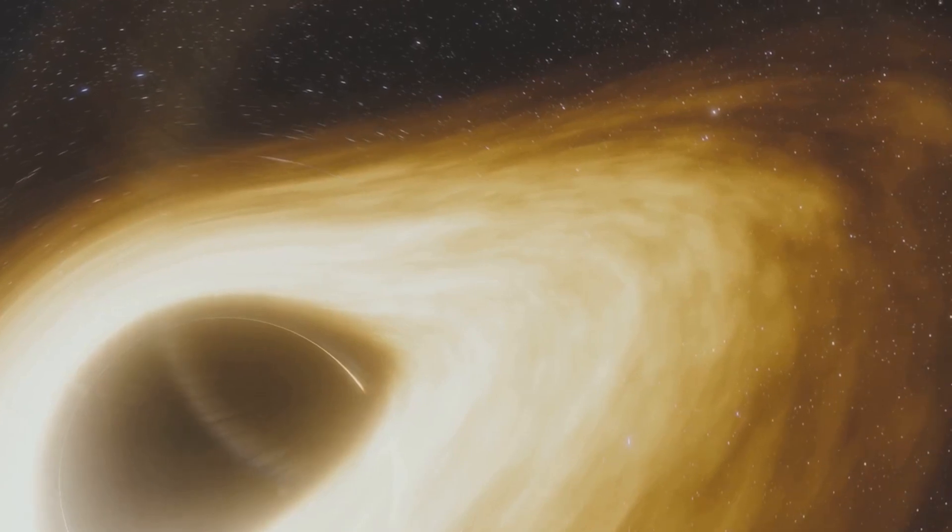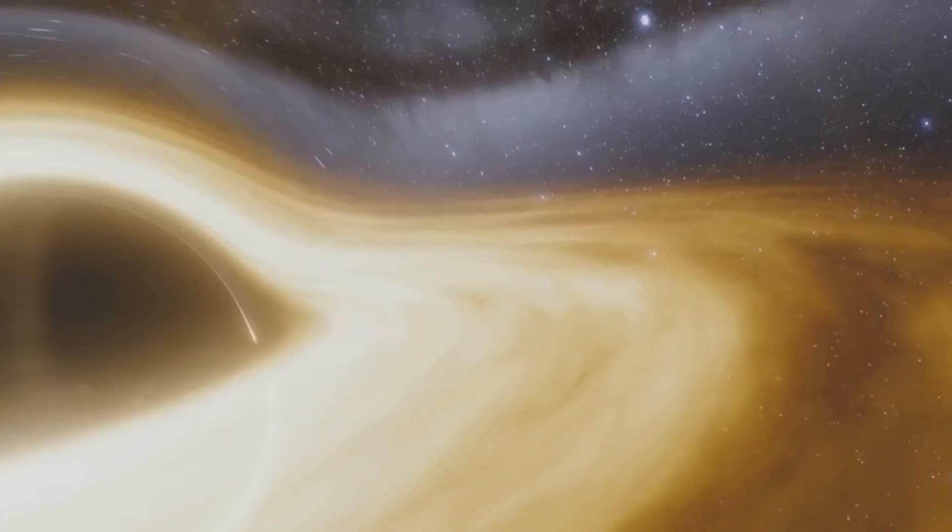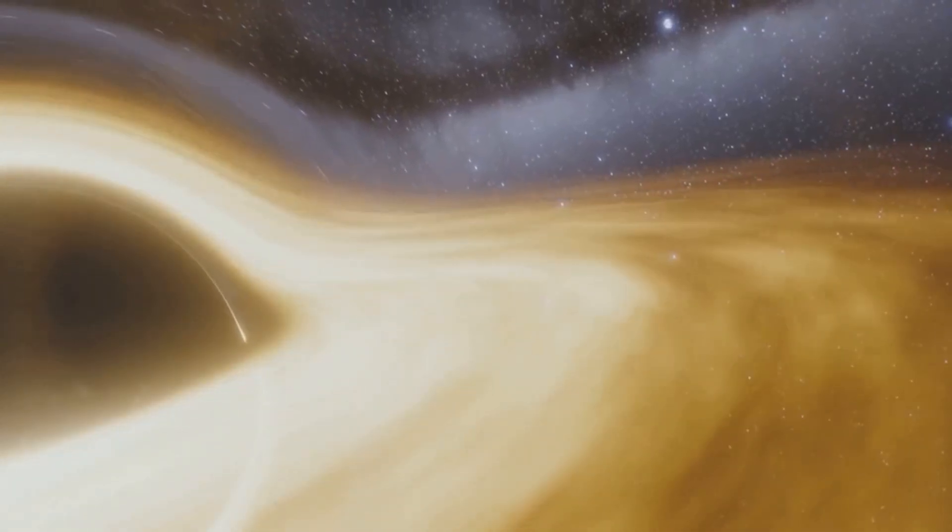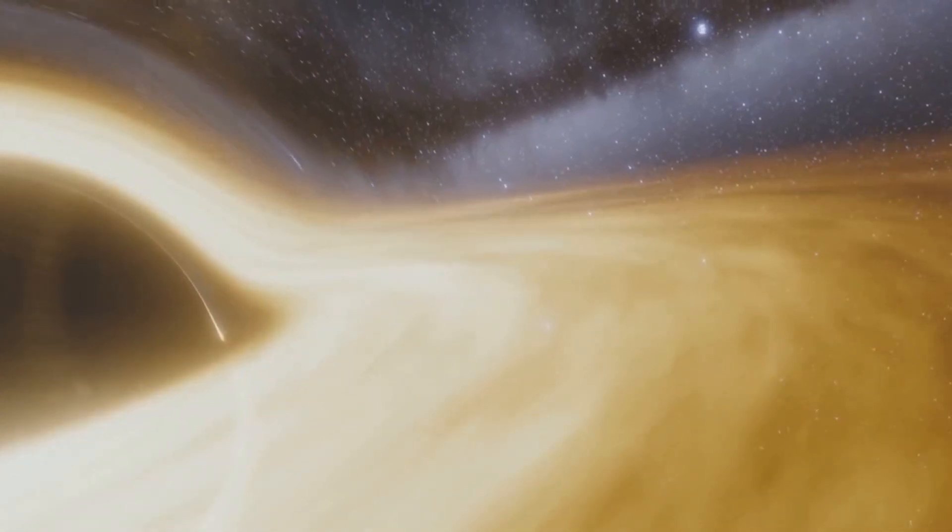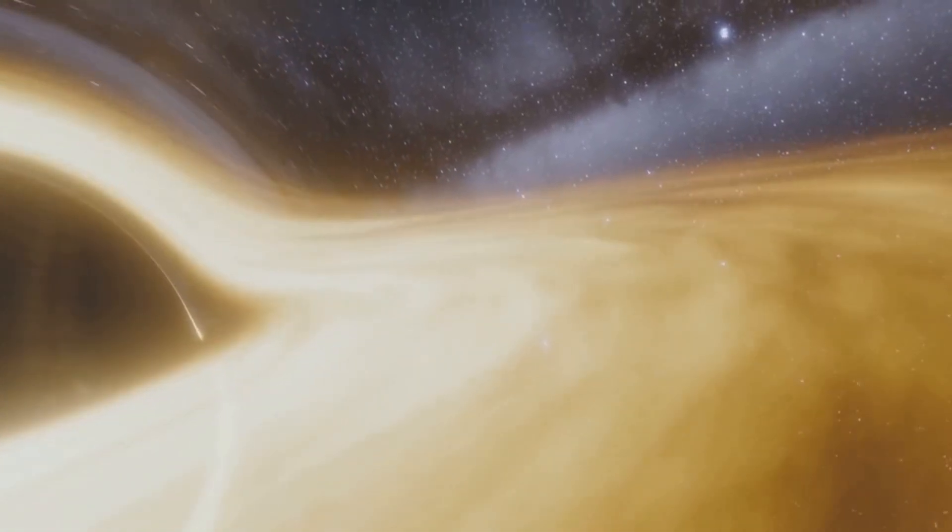The material sucked in spirals toward the black hole, forming what's called an accretion disk. This disk gets heated up due to the immense gravitational pull, and it's this heat that we can detect as bright, energetic radiation.